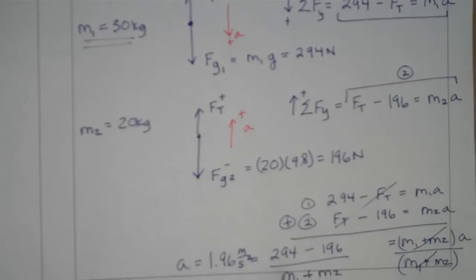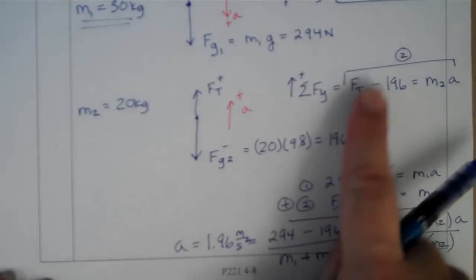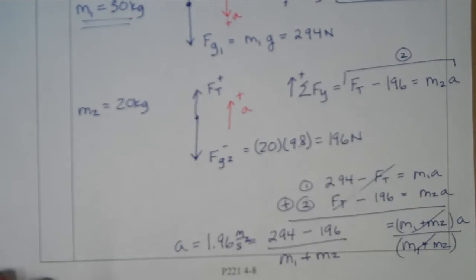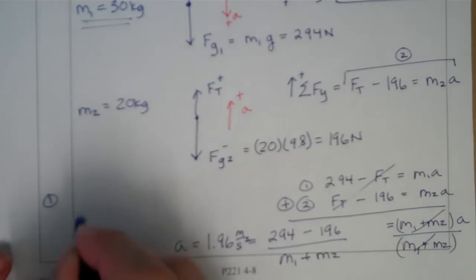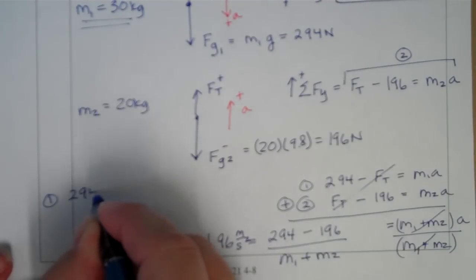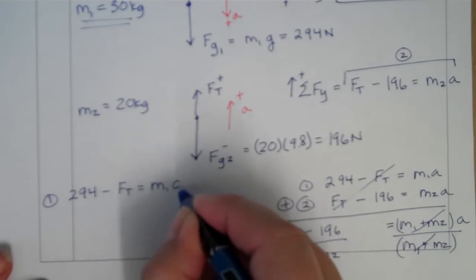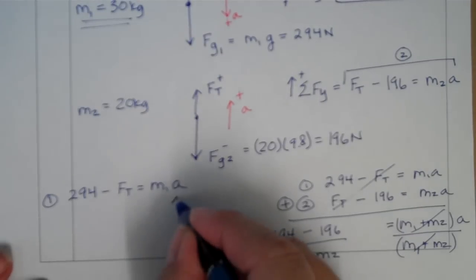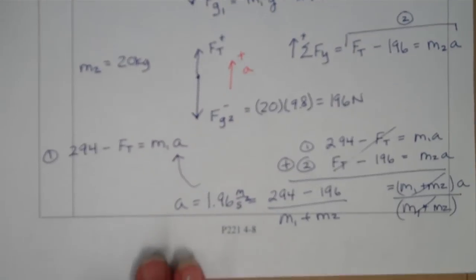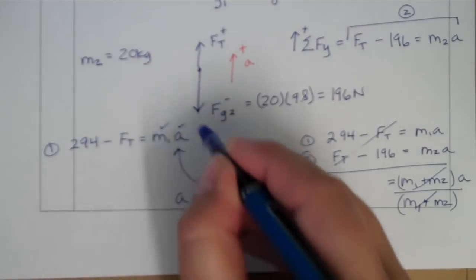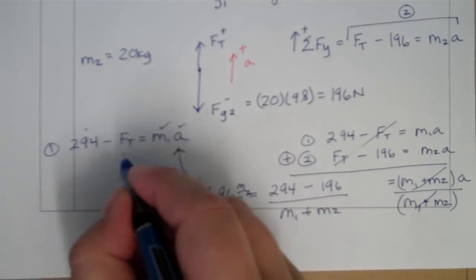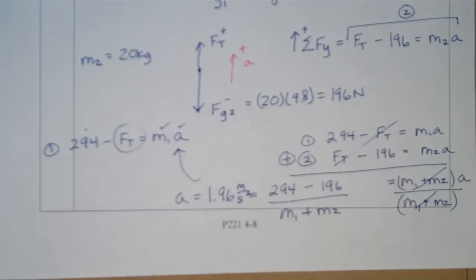And now we could go back to either equation 1 or equation 2 to solve for tension. So if we use equation 1, we have that 294 minus the force of tension equals mass 1 times acceleration. We know what our acceleration is. We know what mass 1 is. So we should be able to solve for FT. So we could solve for that internal tension.